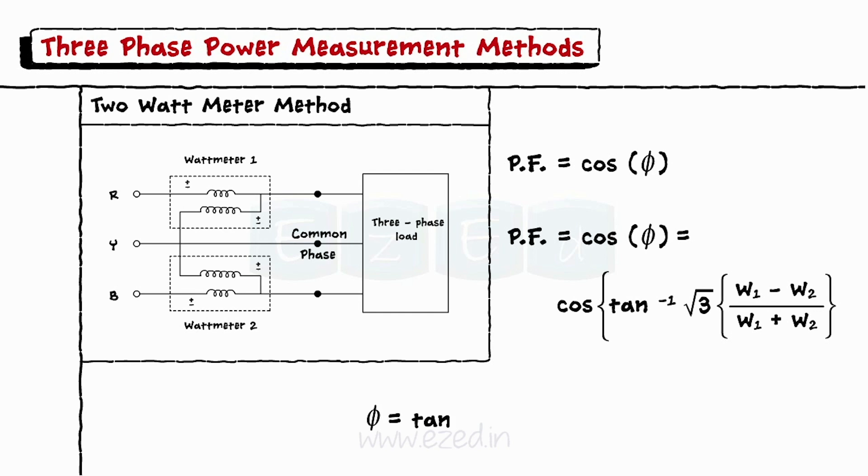We can generalize this formula as phi equals tan inverse of root 3 into higher reading minus lower reading upon higher reading plus lower reading.